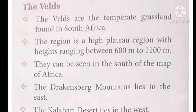The Velds are temperate grasslands found in South Africa. The region is a high plateau region. The Velds is a high plateau region with heights ranging between 600 meters to 1,100 meters. They can be seen in the south of the map of Africa.